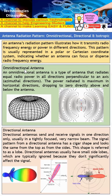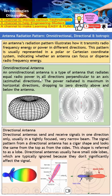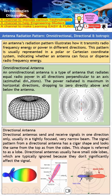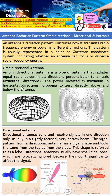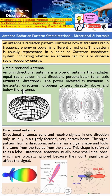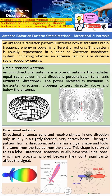An omnidirectional antenna is a type of antenna that radiates equal RF power in all directions that are perpendicular to an axis — which is the azimuth direction. The power radiation is maximum in the horizontal direction, dropping to zero directly above and below the antenna.